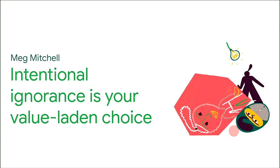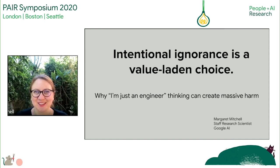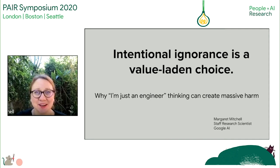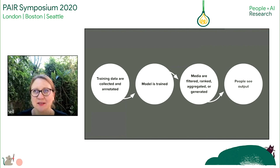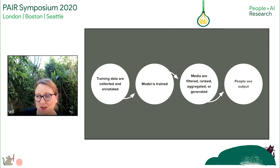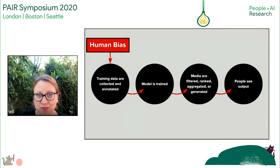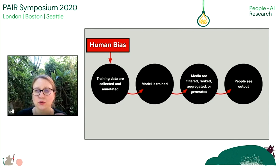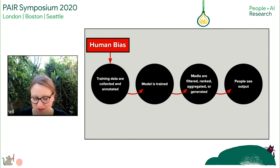Hi, I'm Margaret Mitchell. I'm a researcher at Google, and I'll be talking about some things I've learned in developing machine learning models throughout my career. We often conceptualize a machine learning pipeline as containing four basic steps: training data are collected, a model is trained, output can go through some post-processing step, and then people see the output. But before we even begin the process, the data itself encodes a subset of human perspectives. Data is not a snapshot of everything and all experiences for all of humanity — it's a very limited subset with all kinds of skews reflecting the way people represent themselves in that data.